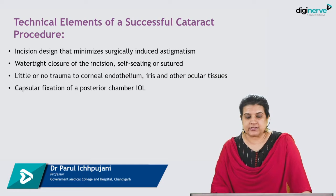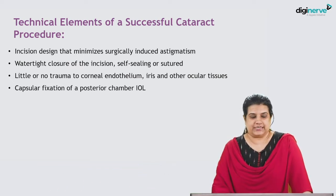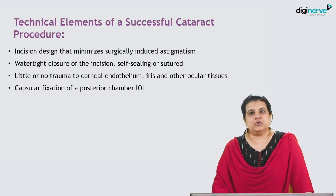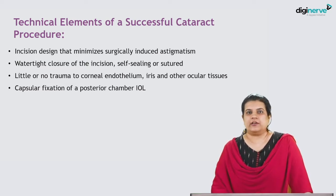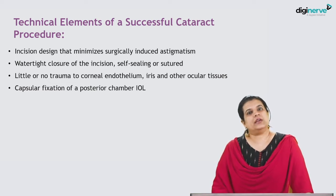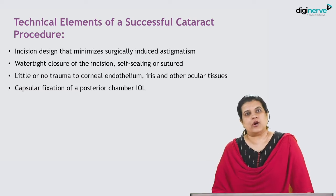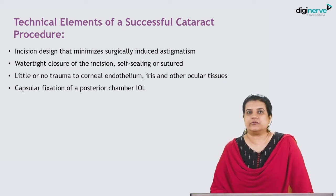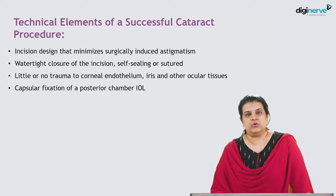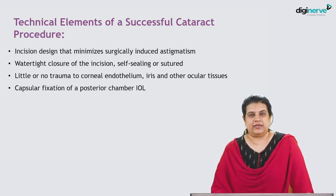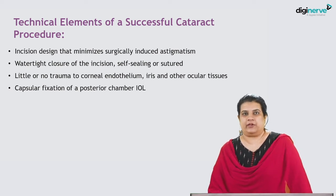The technical elements of a successful cataract procedure include the incision design. The incision design should be such that there is minimum surgically induced astigmatism. Whenever a surgeon makes incisions on the cornea, we make a main port incision and two side port incisions for phacoemulsification surgery, or we make a large curvilinear incision from 10 to 1 o'clock in cases of extracapsular extraction. You must look at the preoperative curvature of the cornea — that is the K1 and K2 — to decide which is the best side to operate so that astigmatism in the postoperative period can be minimum.